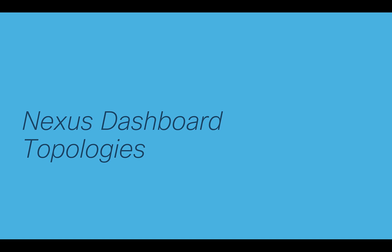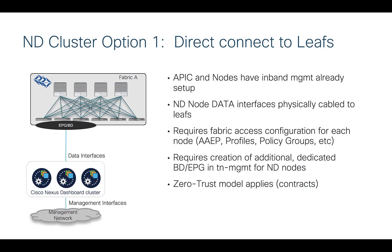Now let's talk about how to connect this to your fabric — what topology choices do you have. Option one is to take your Nexus Dashboard data interfaces and directly connect them to the leaf ports in your fabric. We assume you already have in-band management set up. You physically plug the cables into the leaves directly. Since this is acting like a bare metal install, you need to do all the fabric access configurations — AEPs, interface profiles, interface policy groups — because we're connecting physical interfaces on the leaves themselves.